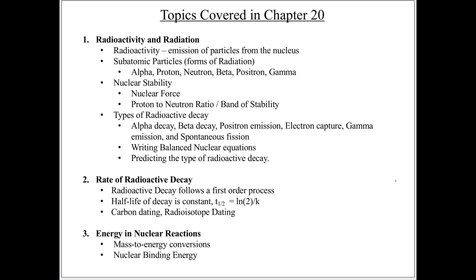The next part is going to be the rate of radioactive decay. Now that we know how the atoms are decaying, we're going to want to look at how quickly they decay. It's going to be a bit of a review of chapter 13 — radioactive decay follows a first-order process, so we're going to look back at the integrated rate equation and also the half-life. This will allow you to do calculations with carbon dating and radioisotope dating.